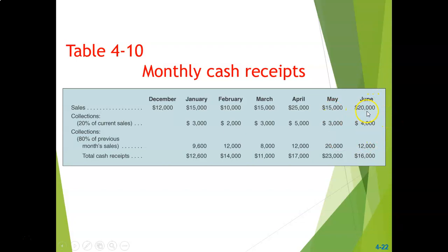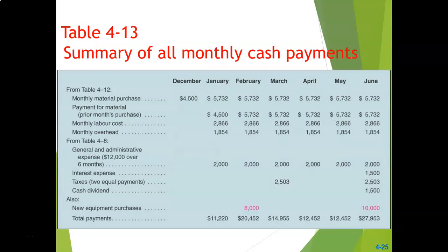In Table 4-10 we can see that June sales would be 20,000, and we are aware that 80% of the previous month's sales will be collected in the current month. Therefore, at the end of June, 80% of June's sales will be outstanding, and that 80% of June sales will be 16,000.